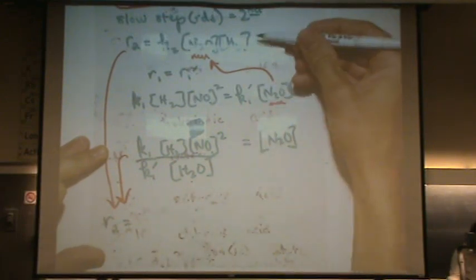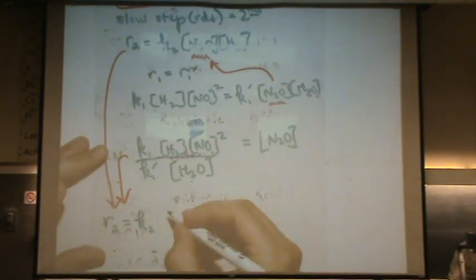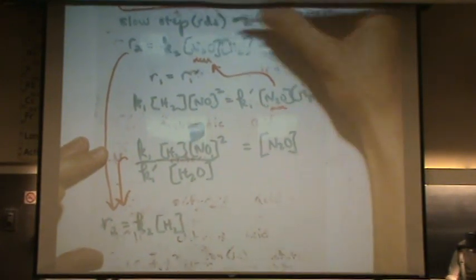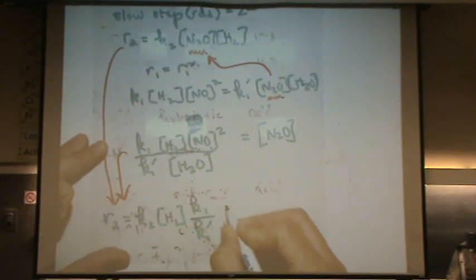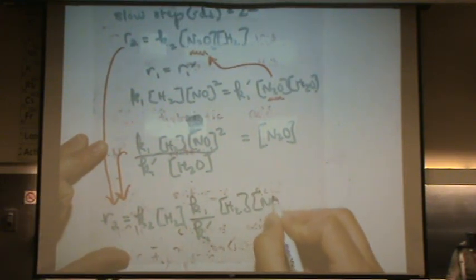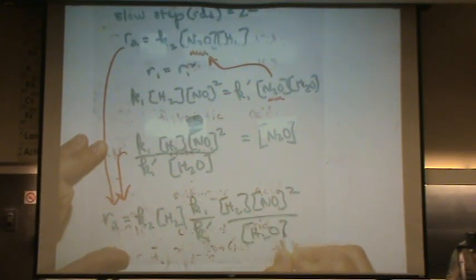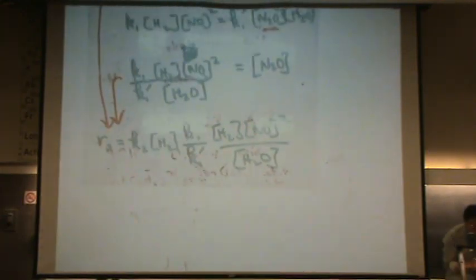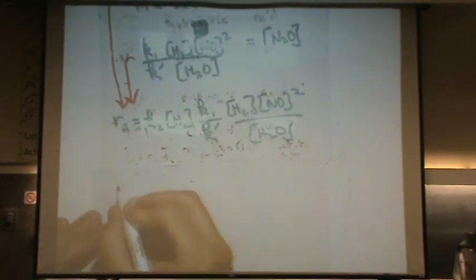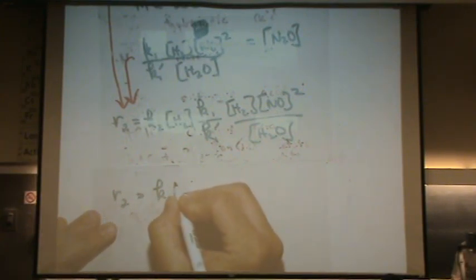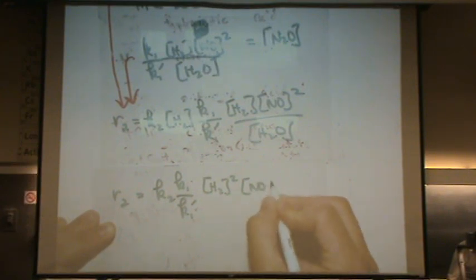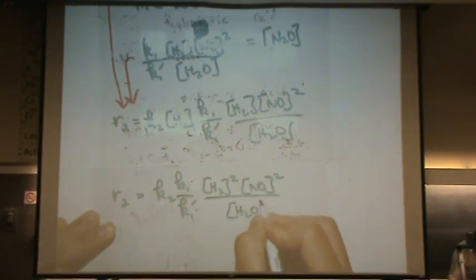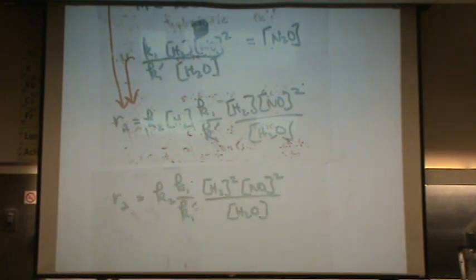So, R2, remember that's going to be my answer. That's the slow step. That's K2. And I'll write H2 as well. Now, I'm going to write all the N2O max, which is this right here. Well, that's K1 over K1 prime H2 NO squared over H2O. So, what I'm going to do is just simplify that a little bit, so it looks a little nicer. So, if we simplify this, R2 is K2 times K1 over K1 prime H2 squared NO squared over H2O. And now you'll notice this expression has no intermediate, because it has no intermediate, I'm done.